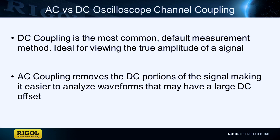Signal coupling deals with the way a waveform's AC and DC components are shown on the oscilloscope's display. Normally DC coupling is used, but there are some waveform types where AC coupling can be beneficial. Let's take a look.